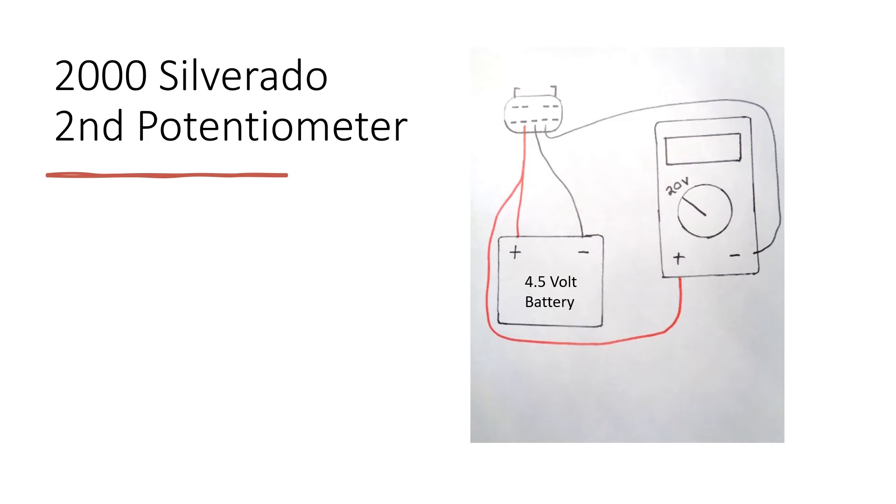For the second potentiometer, you connect the positive from the battery and the multimeter to the bottom left pin, second from the bottom. Connect the negative from the battery to the middle pin and the negative from the multimeter to the bottom second to the right pin.